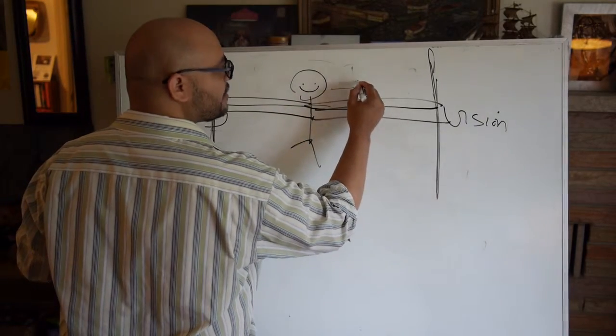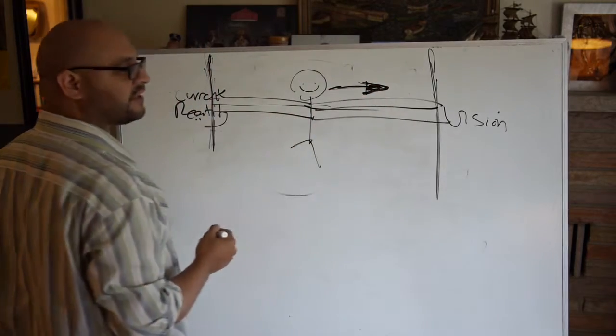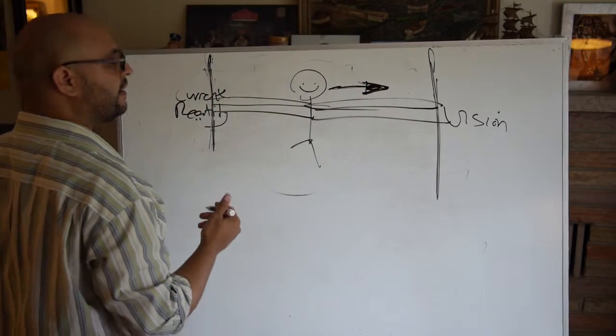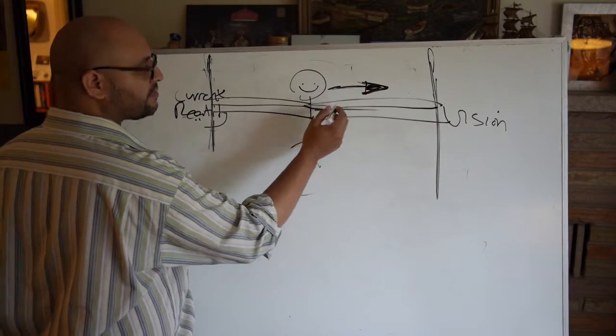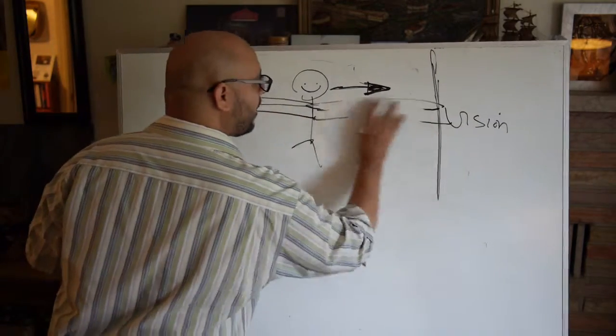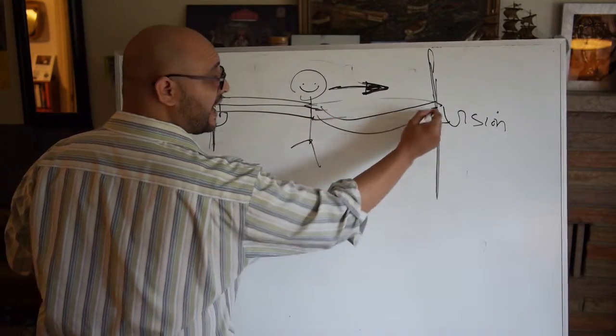So the current reality of being overweight pulls him back to that wall of being overweight. Now, his vision of what he wants has a rubber band too. He wants to be 170 pounds. And so that has a rubber band pulling him towards his vision. He wants to lose weight. He wants to be the ideal weight, right? And so, what happens to Bob? He goes and moves towards his vision. He diets. He runs. He exercises. He watches what he eats.